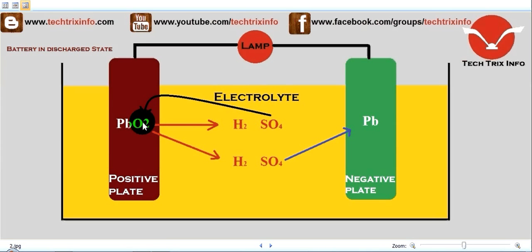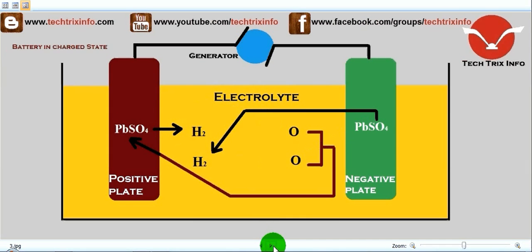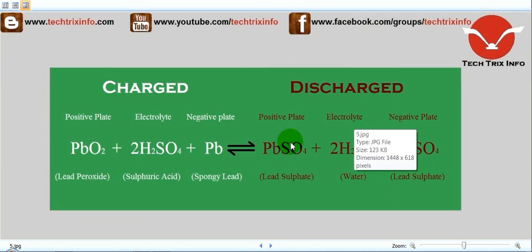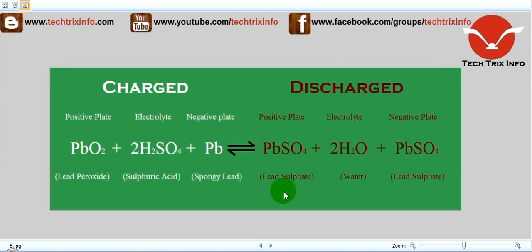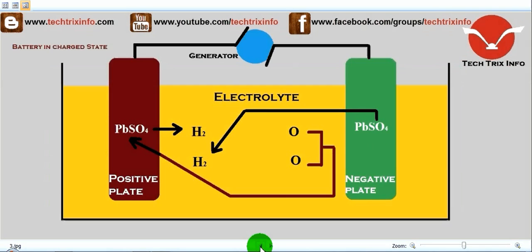Two hydrogen atoms are left behind, and these join with the oxygen in the anode and become water. So during discharge, the positive plate (anode) has PbSO4 (lead sulfate), the electrolyte contains water (2H2O), and the negative plate also has PbSO4 (lead sulfate).